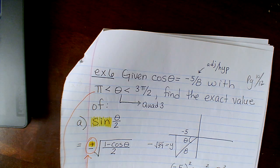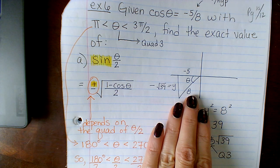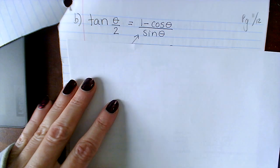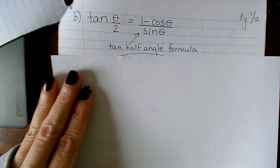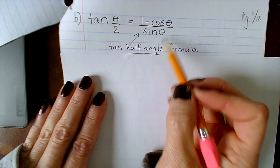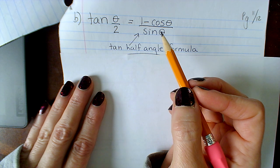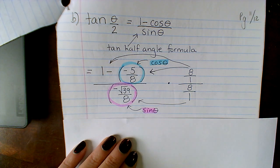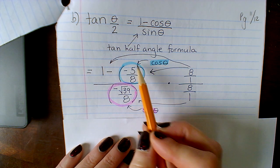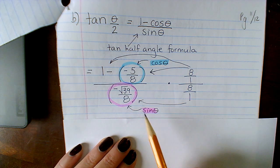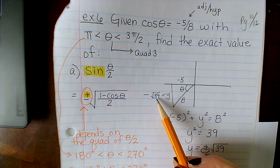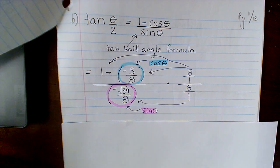So let's look at this same scenario, same theta, but now for tangent of theta over 2. So there's the tangent half angle formula. Remember, you have three to choose from. Pick any one that you want. I just happened to pick that one. The cosine theta was given to us in the original problem. The sine of theta is where I needed that right triangle. So I had to go back over here. The sine is opposite over hypotenuse. So negative root 39 over 8.